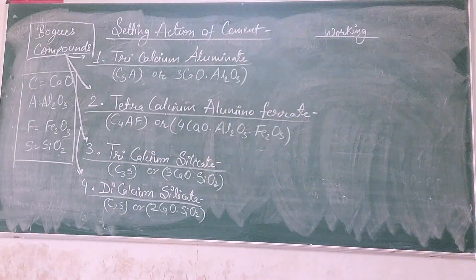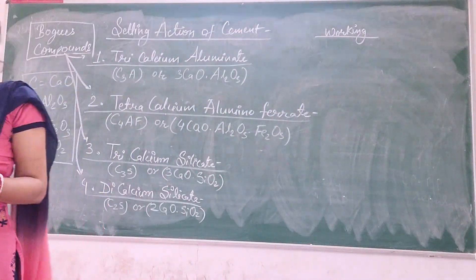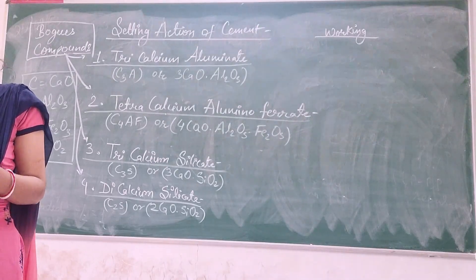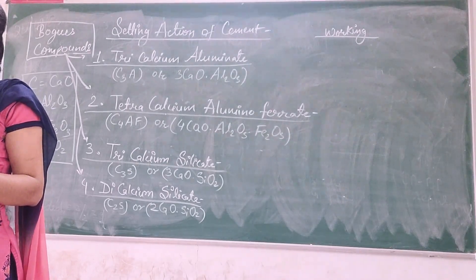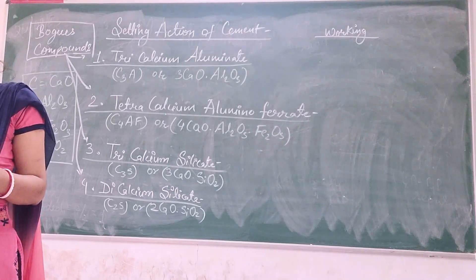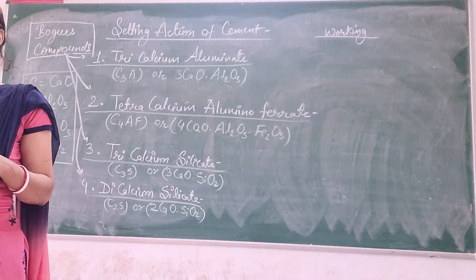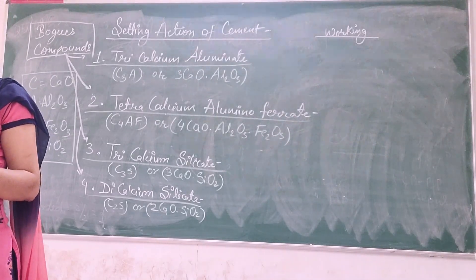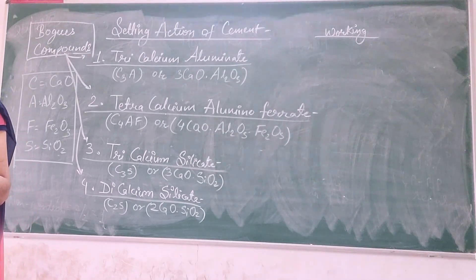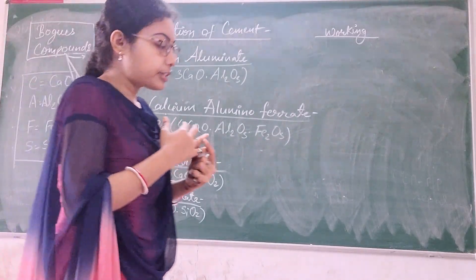What is your initial setting time? When you add water to your cement, at the very start, your cement sticks to your hands — it's a simple paste. But after half an hour, your cement doesn't stick to your hand, but your fingerprints are left on that cement. That is your initial setting time. You can't walk on it or make a firm impression on it.